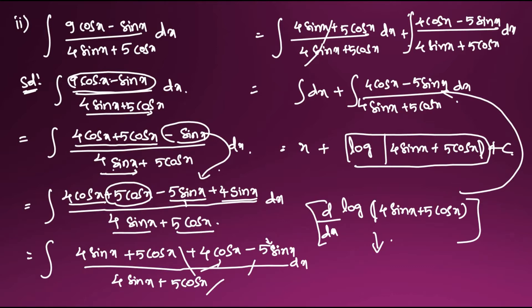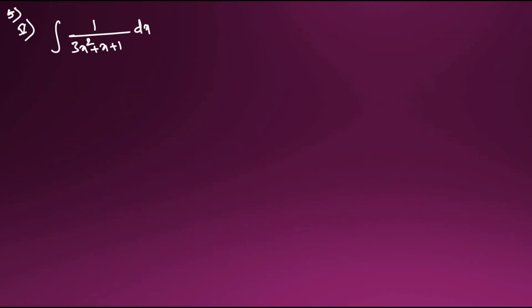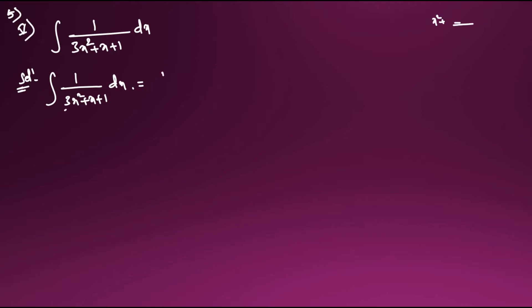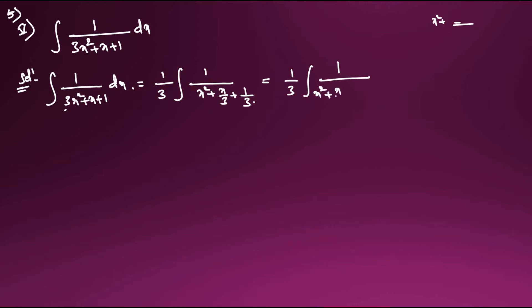The fifth question is: integral of 1/(3x² + x + 1) dx. To solve, we first take out the 3 from the denominator. It becomes (1/3)·integral of 1/(x² + x/3 + 1/3) dx. Now I'll complete the square in the denominator.